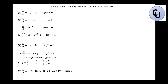But in GPROMS, it's much easier. All you need is one line equation in the model — you write this equation in the model, and then in the process you specify the initial condition under the initial section, and then you run it. Just one line in the model, one line in the process, then you run.